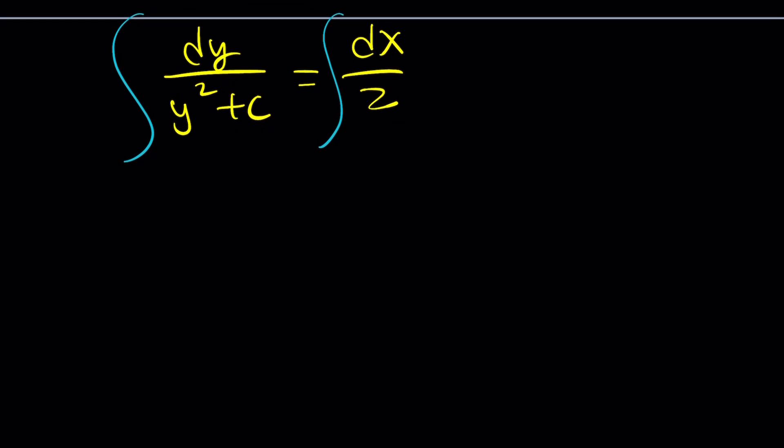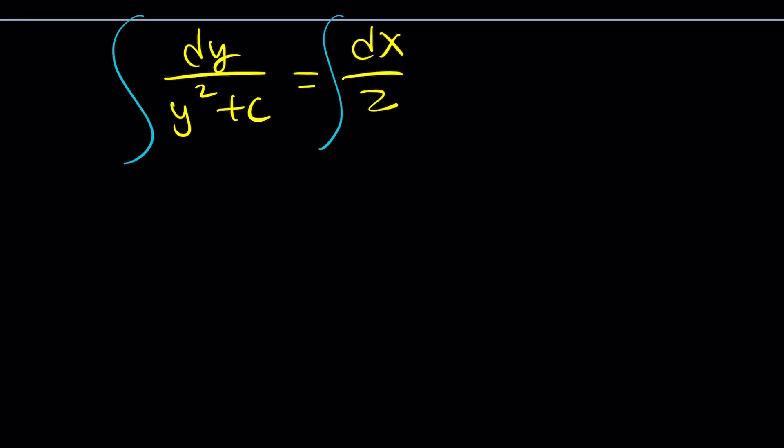Okay, how do you integrate y squared plus c, though? It's in the denominator. So, we'll do a little bit of hocus pocus. I mean, mathemagic. Let's go ahead and replace c with a squared. So, we kind of have like the integral of dy over y squared plus a squared.